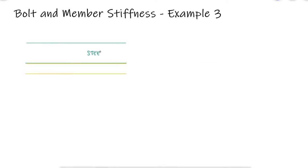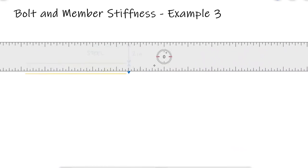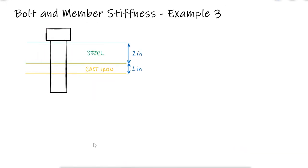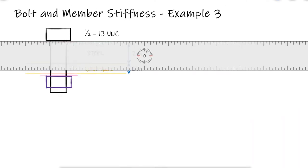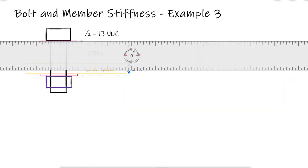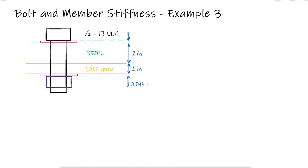A two-inch steel plate and a one-inch cast iron plate are compressed with one bolt and nut and two washers, one under the head of the bolt and another under the nut. The thickness of the washers are 95 thousandths of an inch, the height of the nut is 7 sixteenths of an inch, and we want to find out the bolt stiffness and the stiffness of the members. This is the third example for the bolt and member stiffness main video. Links to the previous example and that main video are in the description below.